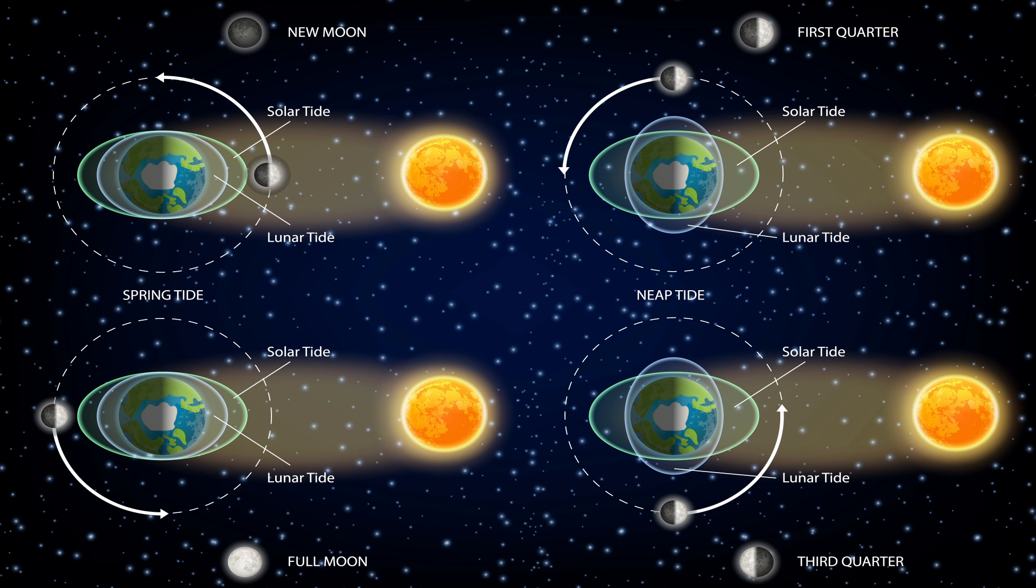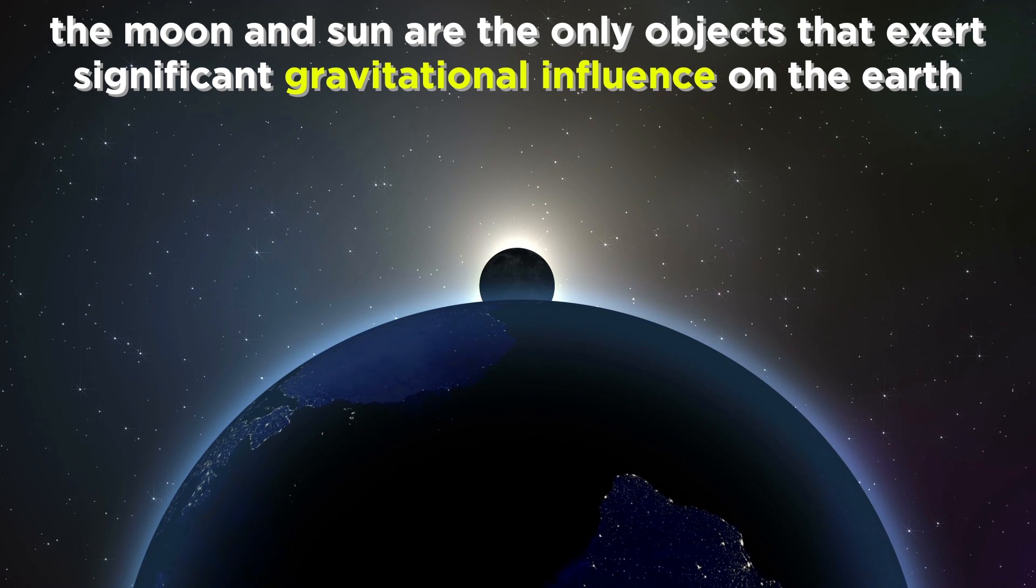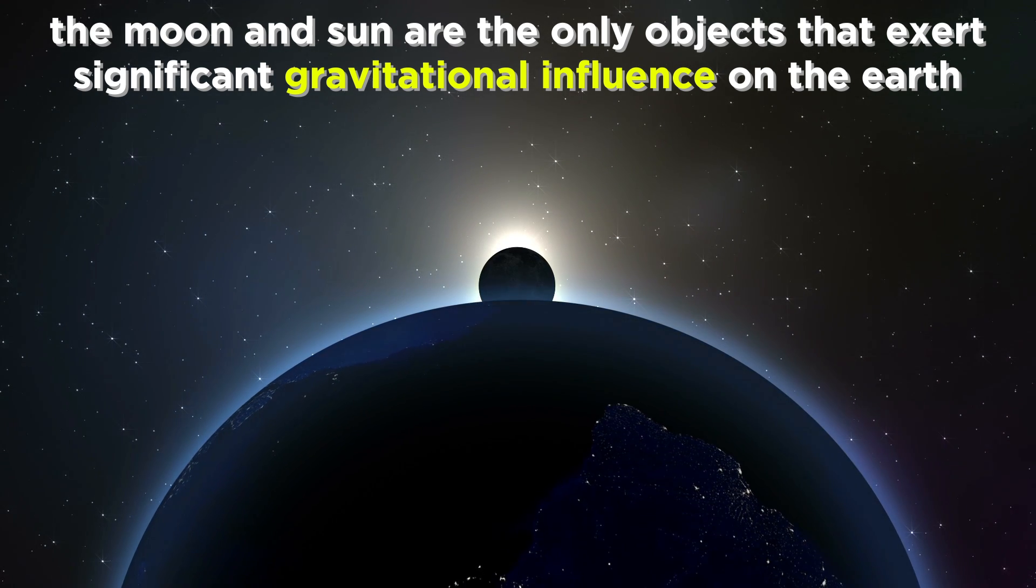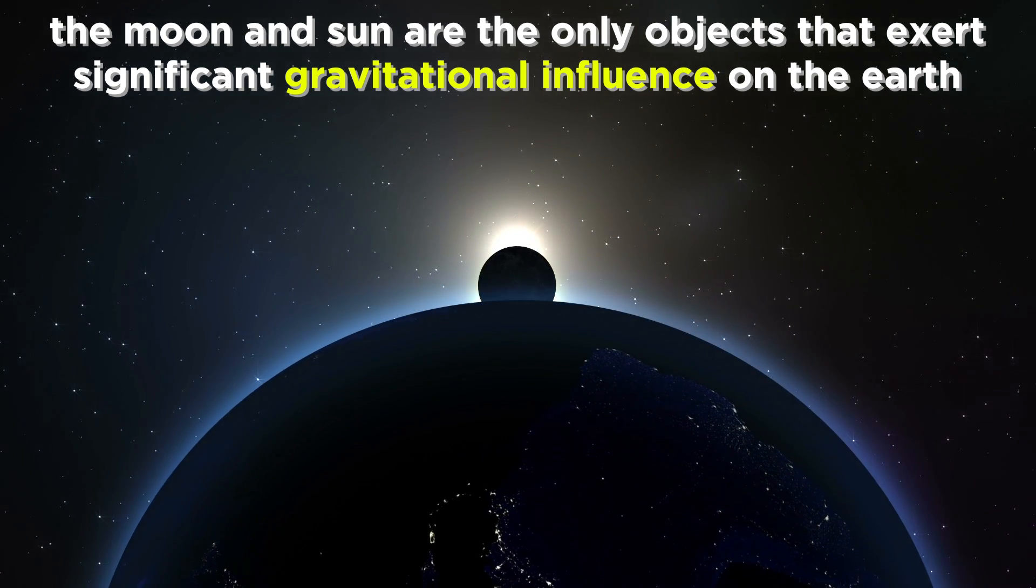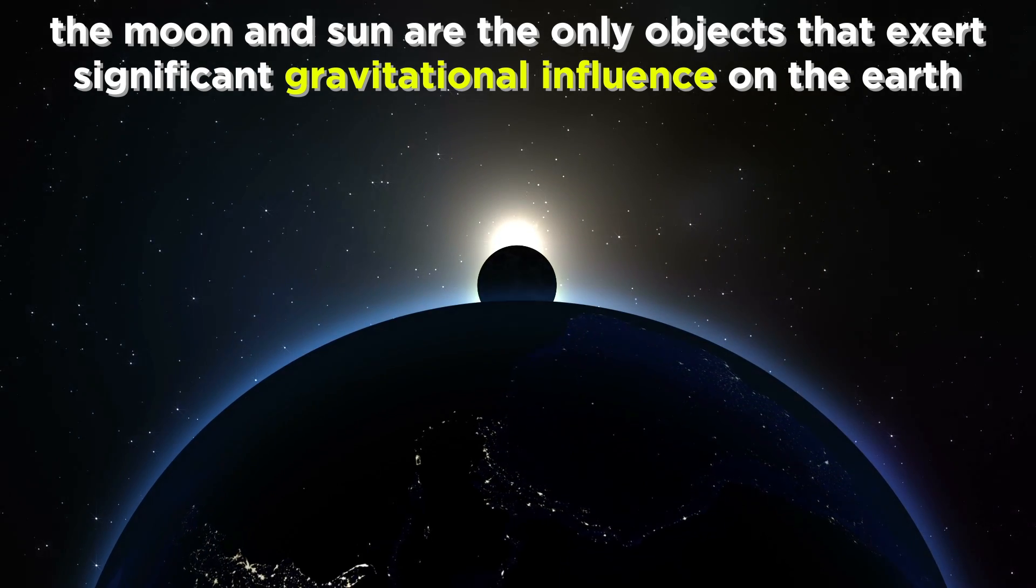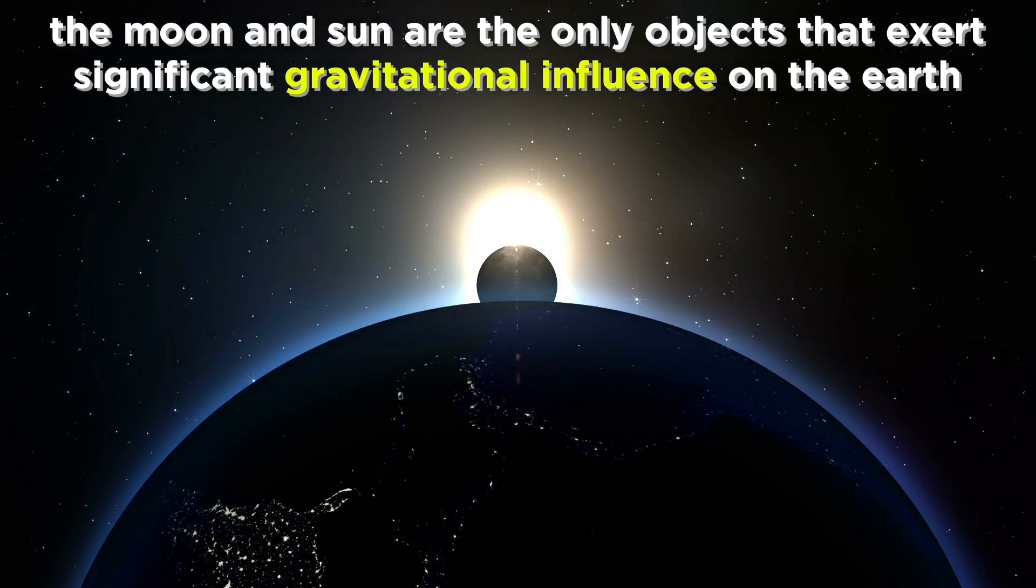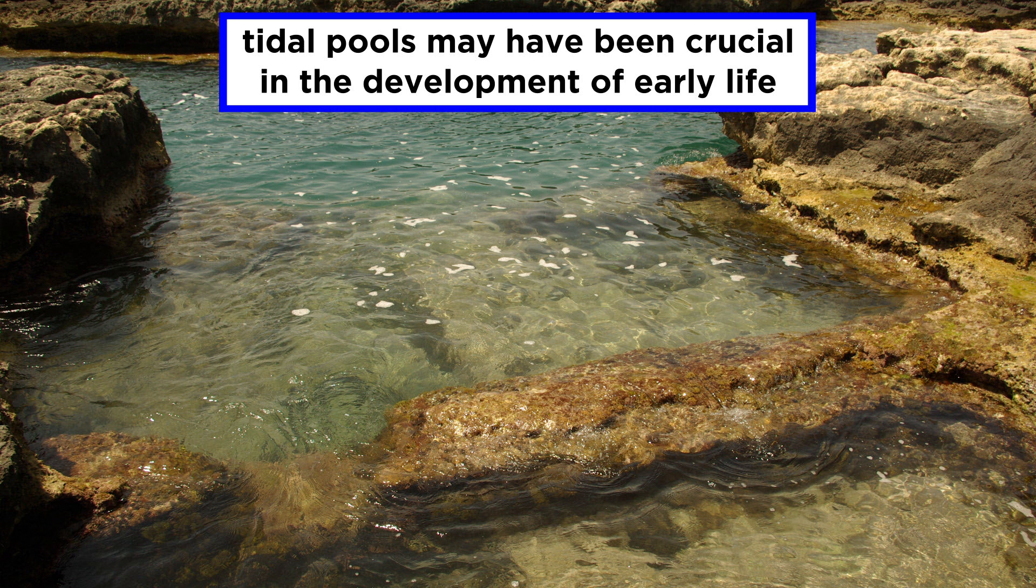There are solar tides as well, although they are much less significant than lunar tides. In this way, the moon and the sun are the only two objects in the universe that have significant gravitational influence on the Earth. As it happens, we believe that the tides may have been a crucial component in the development of early life, so it's possible that without the moon, life on Earth would not exist.